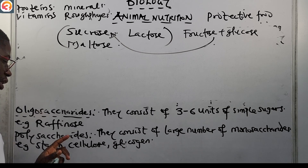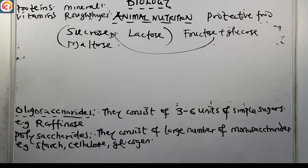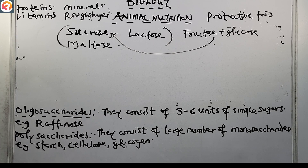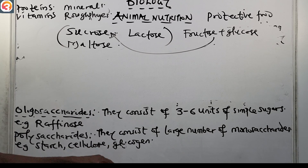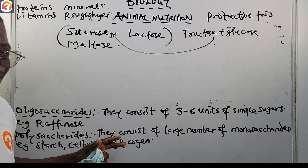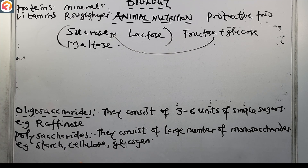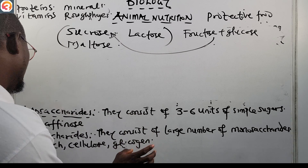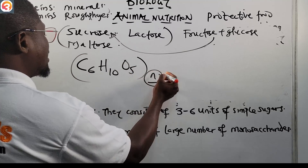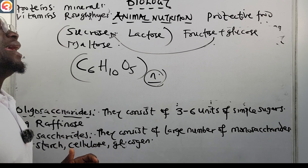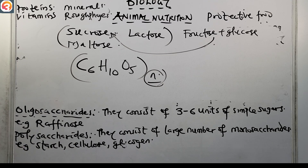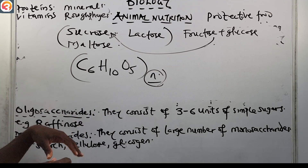The fourth type is polysaccharides. These consist of large numbers — potentially thousands — of monosaccharides joined together. Examples are starch, cellulose, and glycogen. The general formula for polysaccharides is C6H10O5 in the power n, where n represents the large number of monosaccharide units.